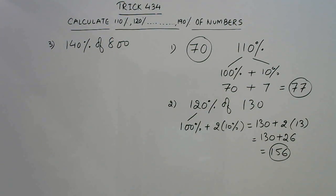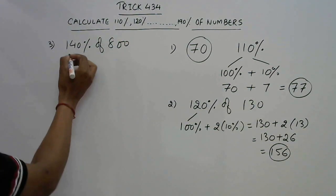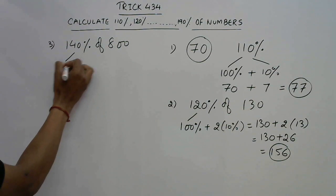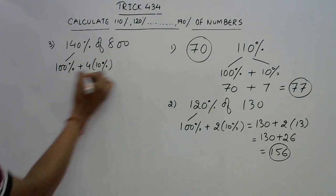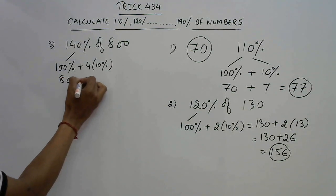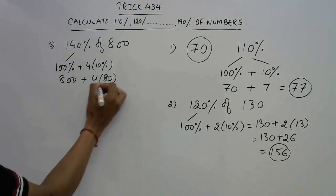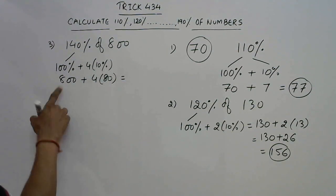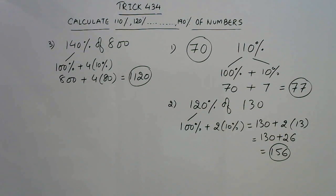For 140% of 800: consider it as 100% plus 4×10%. 100% is 800. 4×10% means 4×80 = 320. So 800 plus 320 equals 1120, which is 140% of 800.